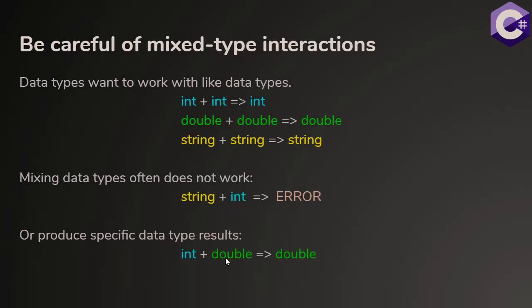Other times, different data types will work together, but they produce results of a specific type. For example, if I mix an integer and a double within an algebraic expression, the result will always be a double. Even if the result looks like it should be the whole number one, what will be produced is the double value 1.0.